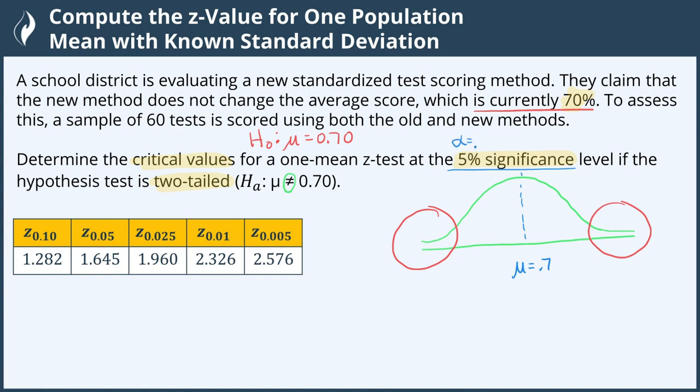Changing this to a decimal, we have 0.05, but that's the entire amount of area under both tails. So we have the area here and the area here that equals a significance level of 0.05, or five percent.